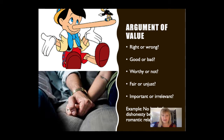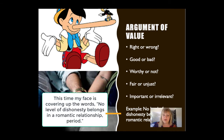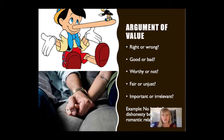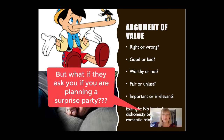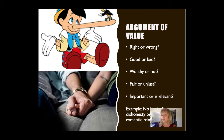The second argument type is one of value. When presenting an argument of value, you are essentially debating the rightness or wrongness of a particular issue — whether something is good, bad, worthy or not, fair or unjust, important to our lives, or simply irrelevant. For example, a former student gave a speech stating that absolutely no level of dishonesty belongs in a romantic relationship — from planning a surprise party all the way to infidelity. Do you agree or disagree?